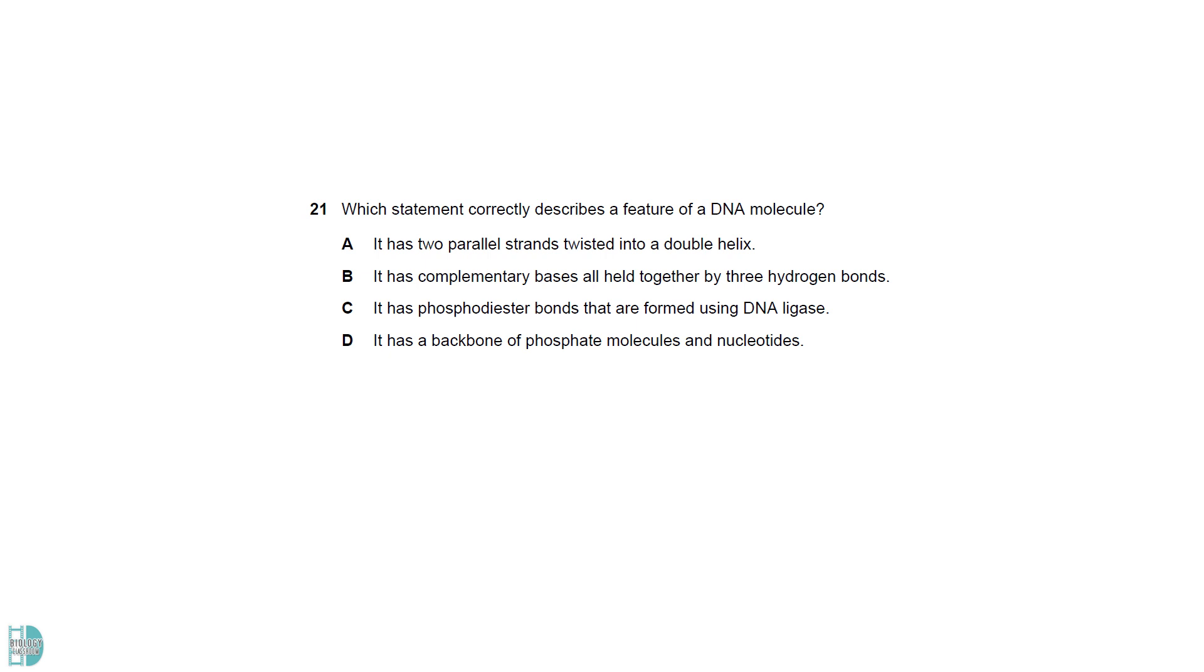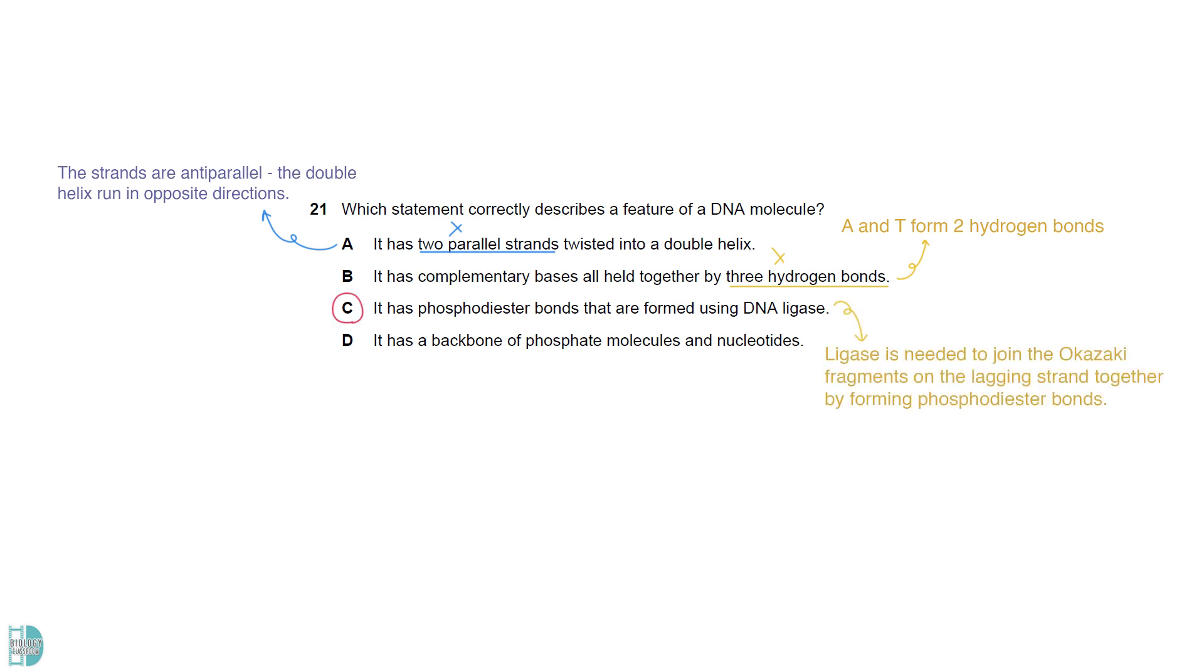A is wrong because the strands are anti-parallel. It means the two strands of the double helix run in opposite directions. B is wrong because A and T form two hydrogen bonds, not three. C is correct as ligase is needed to join the Okazaki fragments on the lagging strand together by forming phosphodiester bonds.